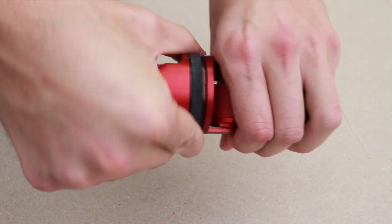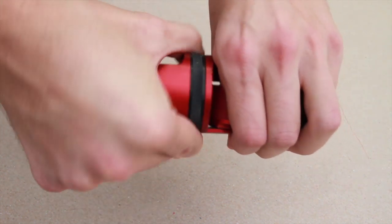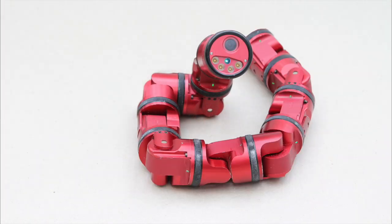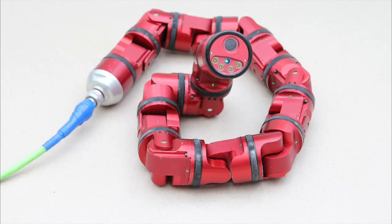The modules connect using a large threaded collar that provides a sealed and rugged connection. The complete snake consists of these modules plus specialized head and tail modules.